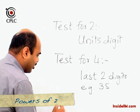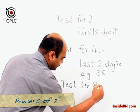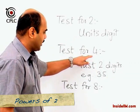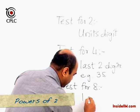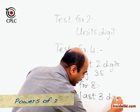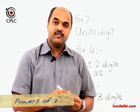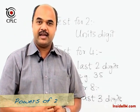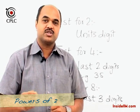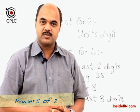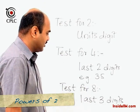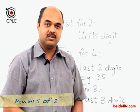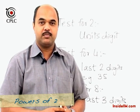Moving on to another power of two — suppose the test for eight. You will notice that the test for two depended on the last digit, the test for four depended on the last two digits, and hence the test for eight depends on the last three digits. If the number formed by the last three digits is divisible by eight, or if those three digits are 000, then the entire number is divisible by eight. The remainder test follows the same pattern: take the number formed by the last three digits, divide by eight, and whatever the remainder is, that is the remainder when the entire number is divided by eight.